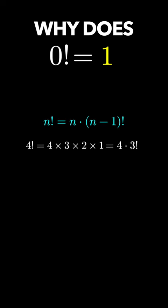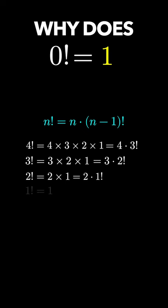3 factorial is 3 times 2 times 1, which is 3 times 2 factorial. 2 factorial is 2 times 1, which is 2 times 1 factorial. And 1 factorial is 1 times 0 factorial. So it has to be that 0 factorial is 1.